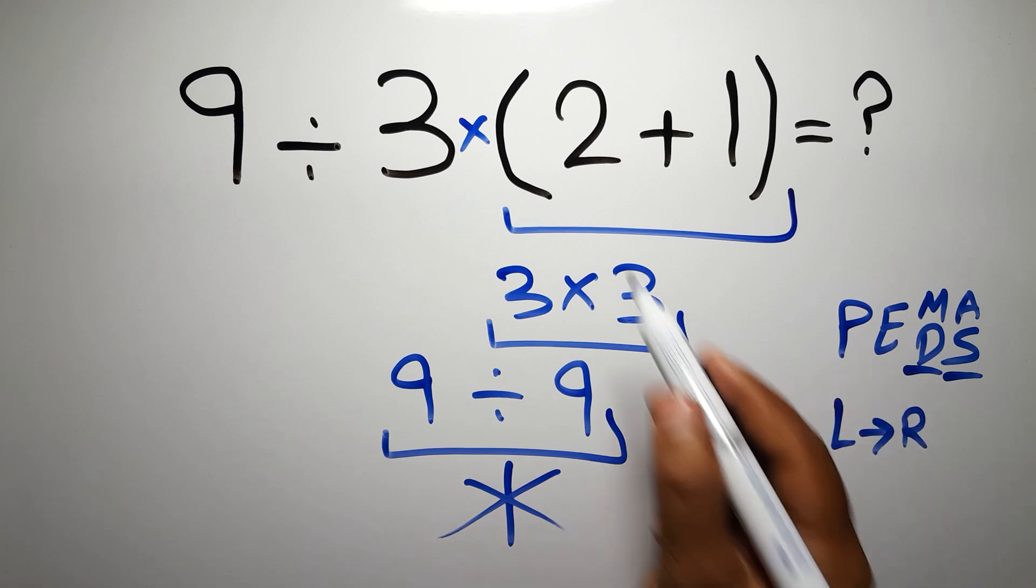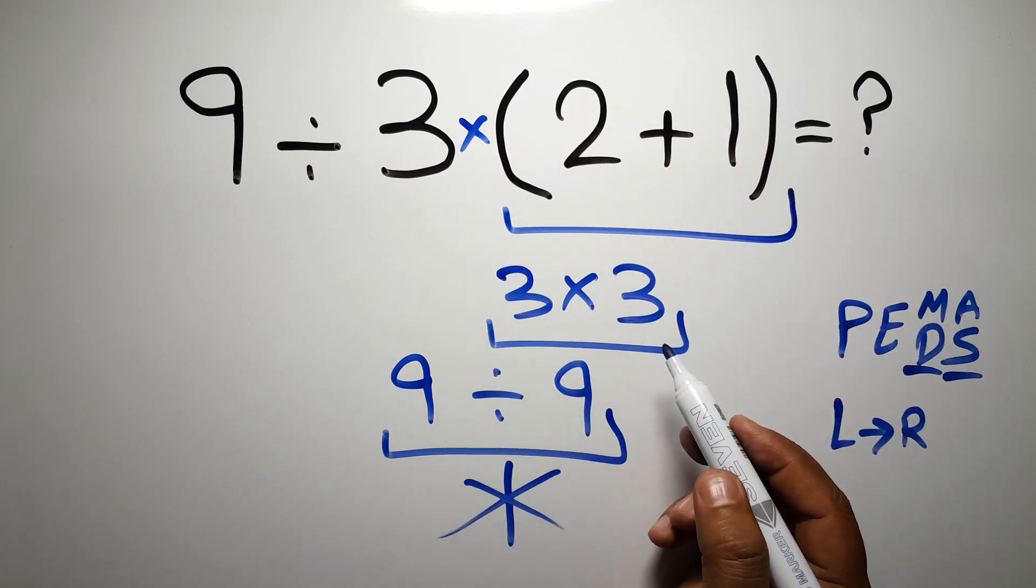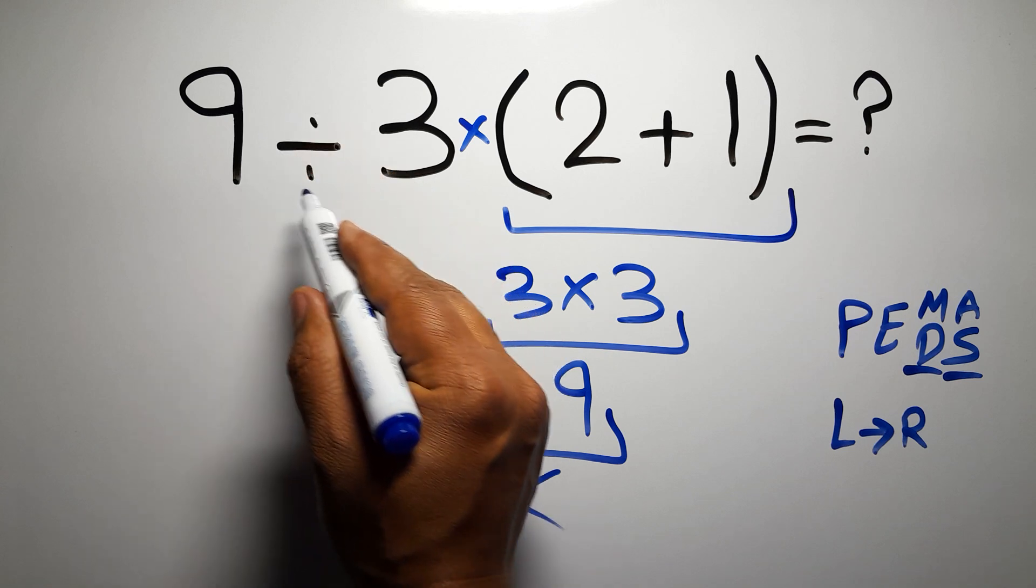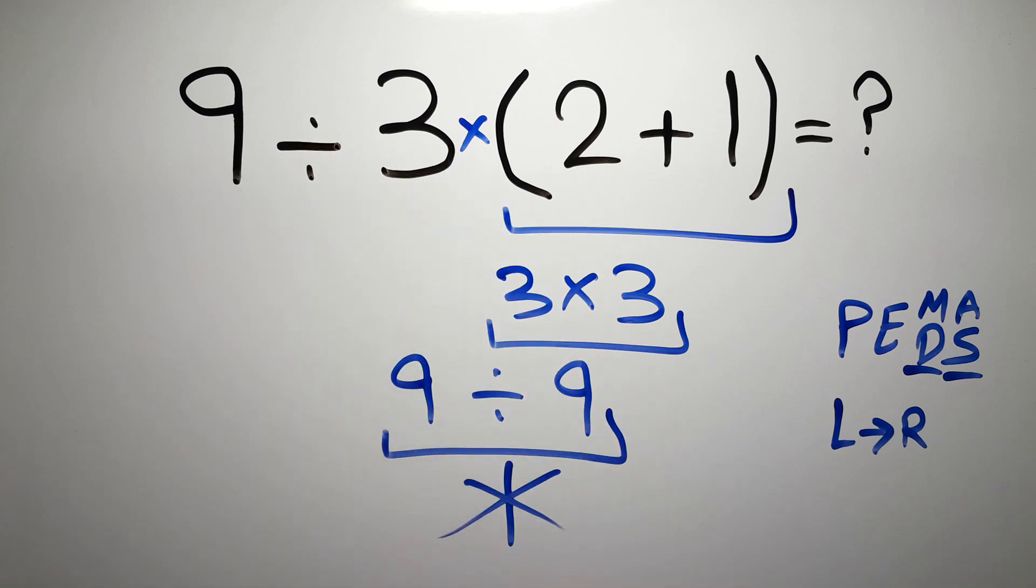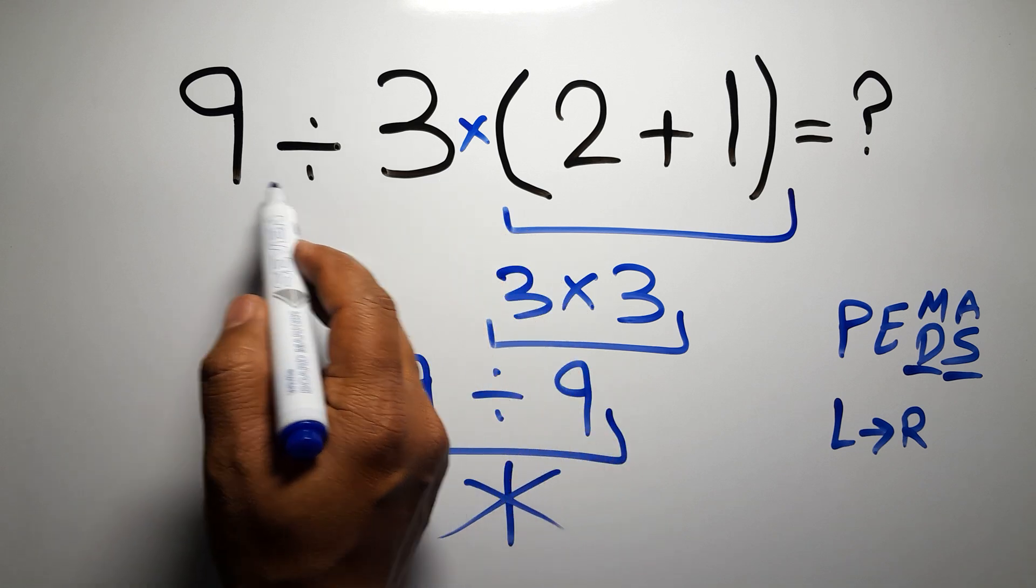According to PEMDAS, first we have to do this parentheses, then this division, and finally this multiplication. If we do this multiplication before this division, it is wrong.